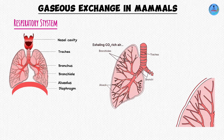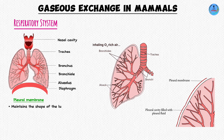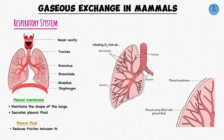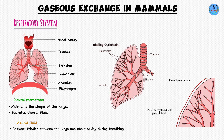Before describing the alveoli, let us describe the lungs themselves. The lungs are found in the chest cavity and are surrounded by a membrane known as the pleural membrane, which has two functions: it maintains the shape of the lungs, and it secretes pleural fluid. The pleural fluid acts as a lubricant — during breathing movements, there is contraction and relaxation of muscles and movement of the lungs and chest cavity, which can cause friction. The pleural fluid reduces friction between the lungs and the chest cavity during breathing, ensuring easy movement of the lungs.